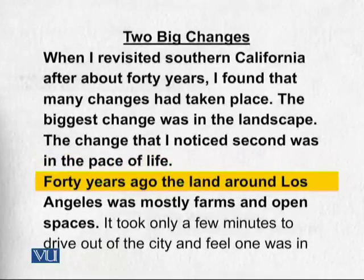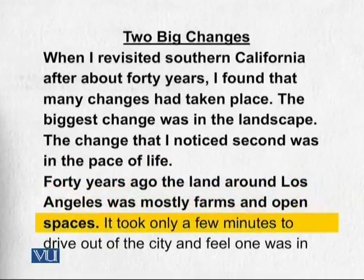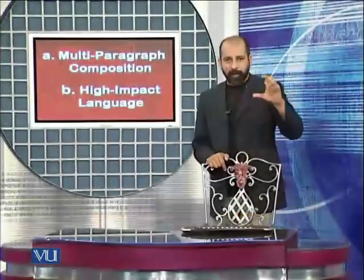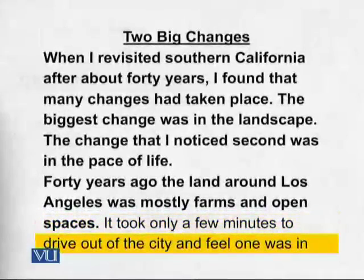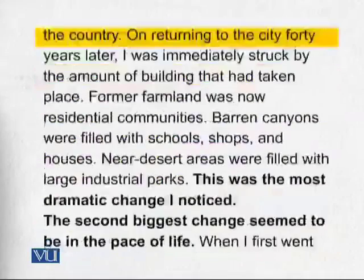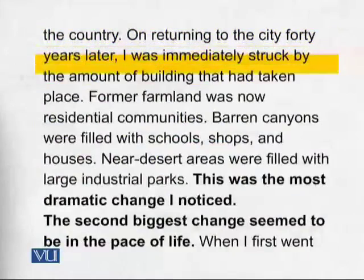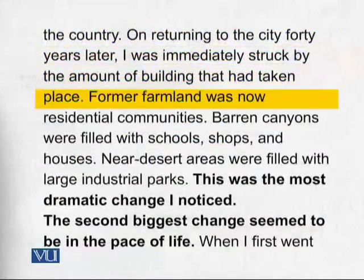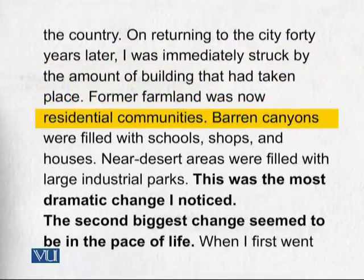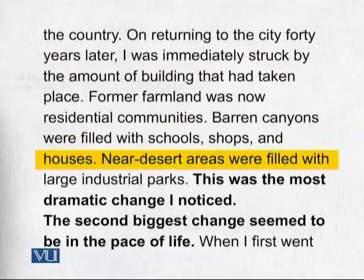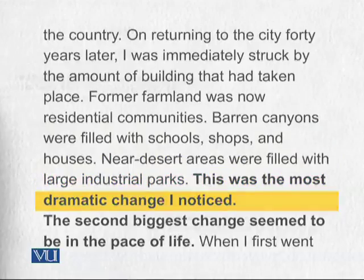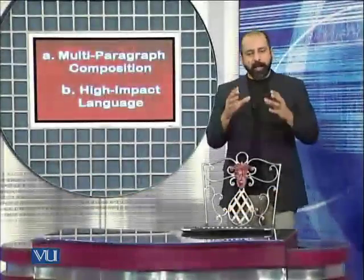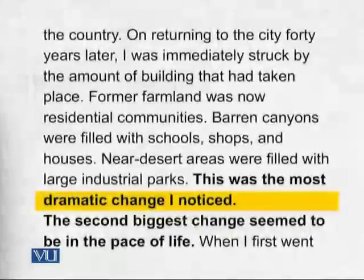The writer is going to discuss two changes: landscape and pace of life, in two separate paragraphs. The first body paragraph reads: '40 years ago, the land around Los Angeles was mostly farms and open spaces.' This is the topic sentence. Supportive details follow: 'It took only a few minutes to drive out of the city and feel one was in the country. On returning to the city 40 years later, I was immediately struck by the amount of building that had taken place. Former farmland was now residential communities; barren canyons were filled with schools, shops, and houses. Near-desert areas were filled with large industrial parks. This was the most dramatic change I noticed.'